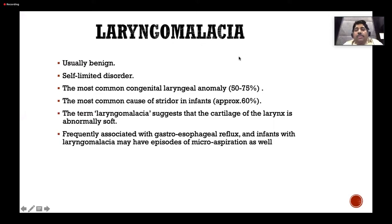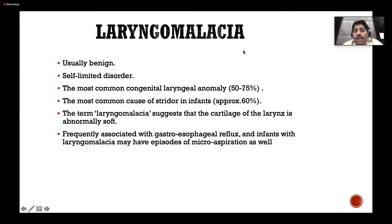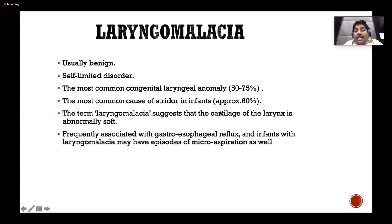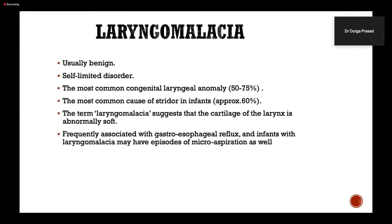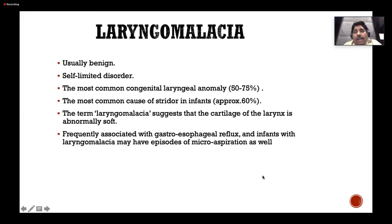SMA presenting as suspected TEF had pooling of secretions and secondary laryngomalacia. Laryngomalacia is the most common congenital laryngeal anomaly, seen in 50–75% of cases, and the most common cause of stridor in infants. The term laryngomalacia suggests abnormally soft laryngeal cartilage, frequently associated with gastroesophageal reflux — laryngomalacia and GER coexist. When a child is not thriving with pooling of secretions, refer for flexible bronchoscopy to distinguish true laryngomalacia from laryngeal web or laryngeal cleft.